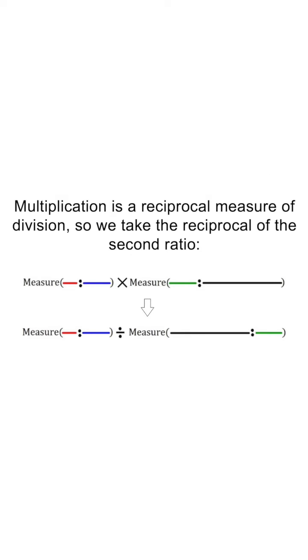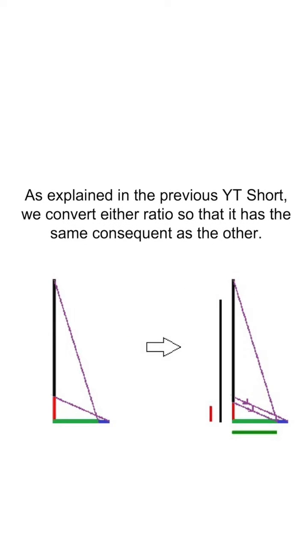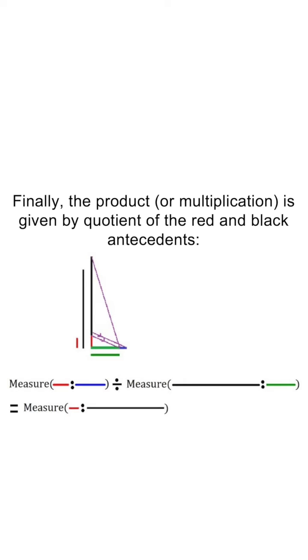First, we take the reciprocal of the second ratio. Then, we represent the ratios as sides of the same angle and convert them so that they have the same consequent. Finally, the product or multiplication is given by the quotient of the antecedents.